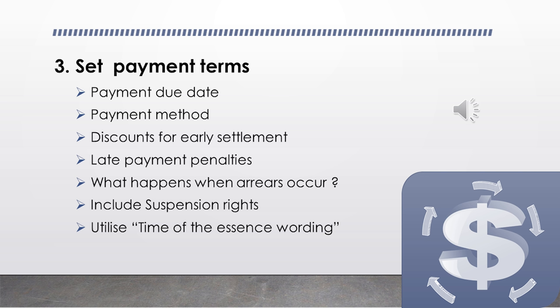The fourth thing to consider is late payment penalties — if there are any, what are they? If it's interest, state the specific level of interest expected. Consider what happens if arrears occur and payments are missed. You have the option to include suspension rights, meaning you can cease delivering services without being in breach of your contractual obligations if the other party fails to pay. You should also include 'time of the essence' wording — meaning performance within the specified period is necessary, and failure to act within the time required constitutes a breach of contract. This means if the other party fails to pay on time, you have the right to terminate the contract early.